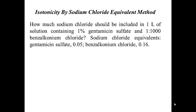The first example is similar to what we did in one of the class activities. In this particular example we have two ingredients. You are required to determine the amount of sodium chloride needed to make a liter of solution containing 1% gentamicin sulfate and 1:1000 benzalkonium chloride isotonic. The sodium chloride equivalents given are 0.05 for gentamicin sulfate and 0.16 for benzalkonium chloride.